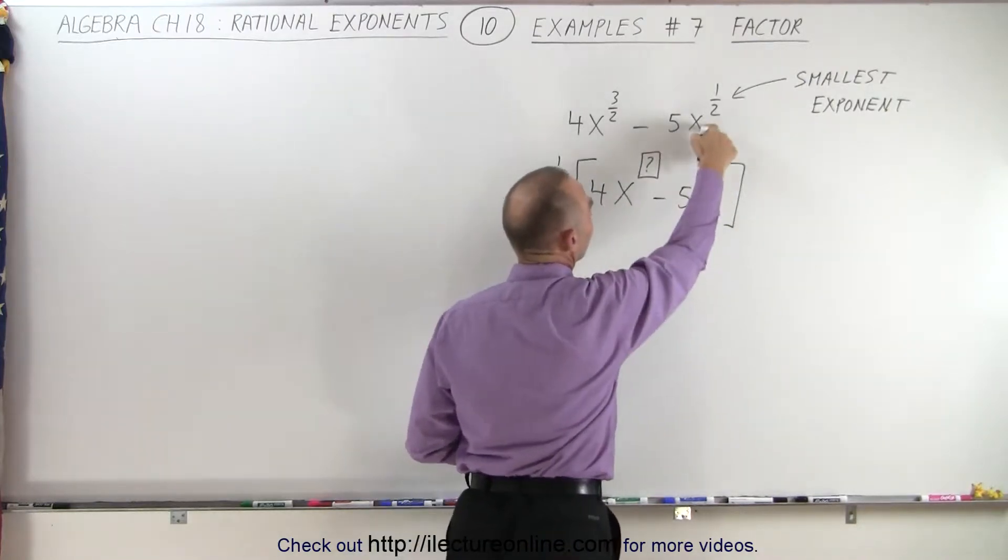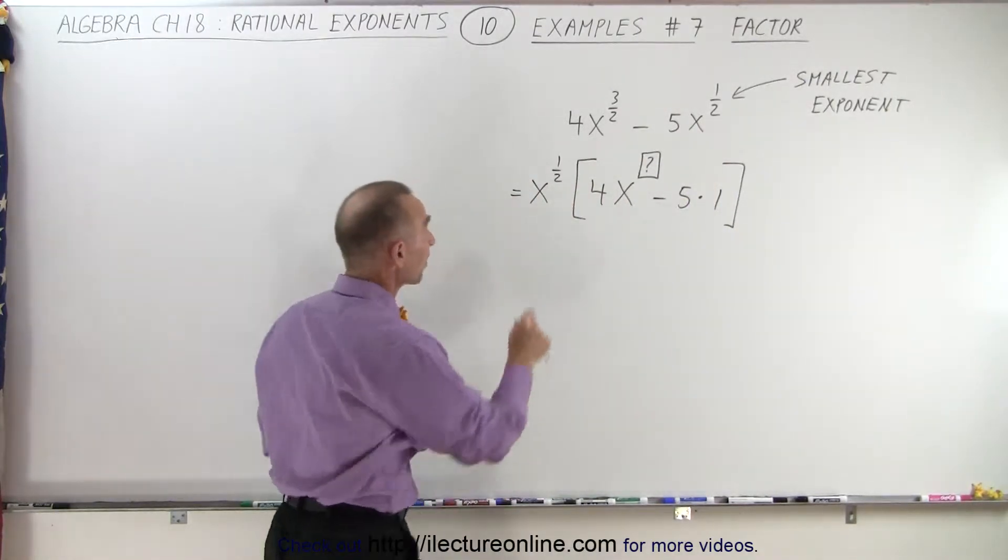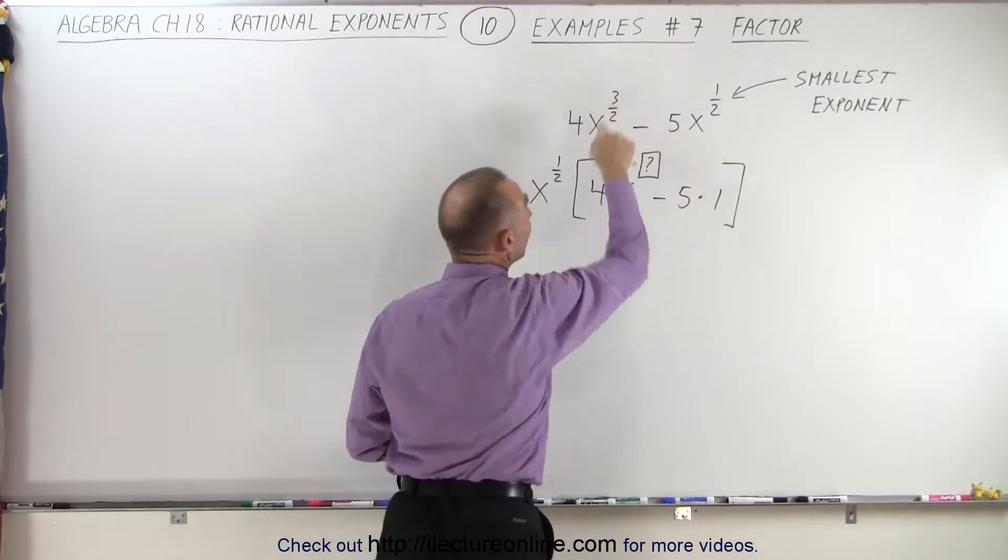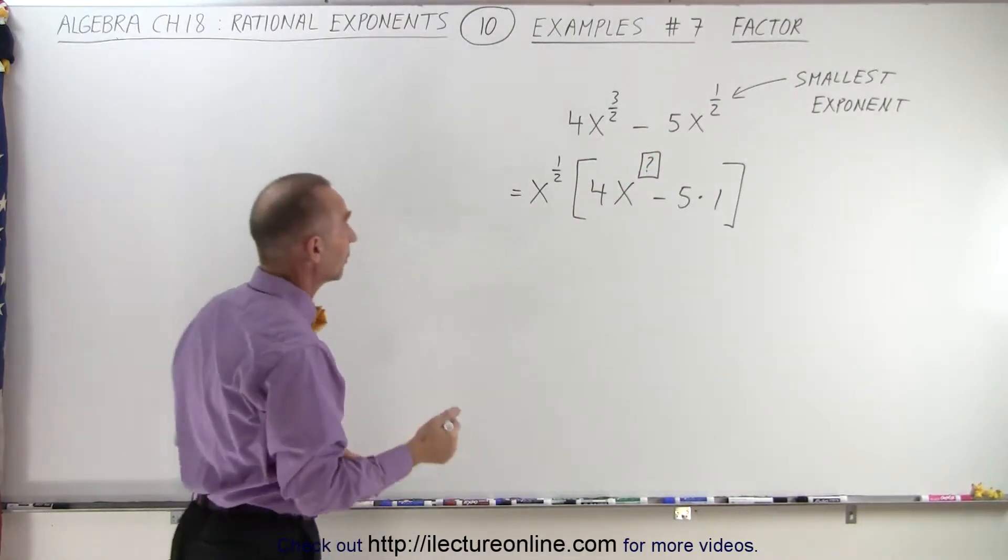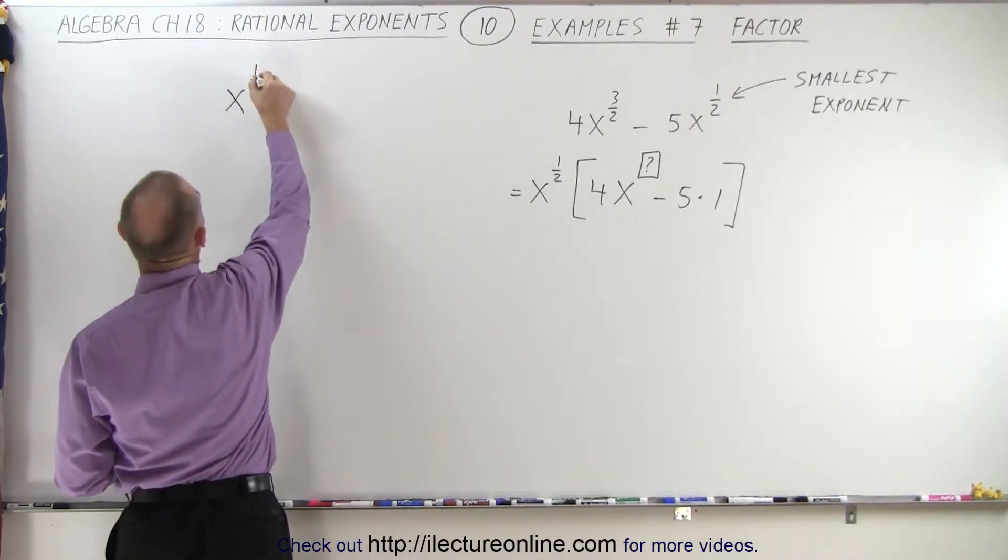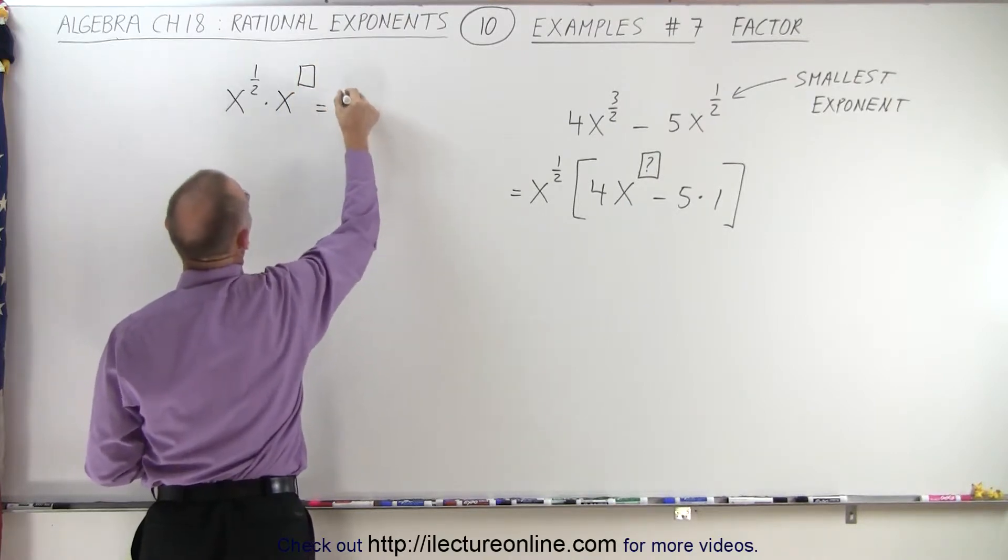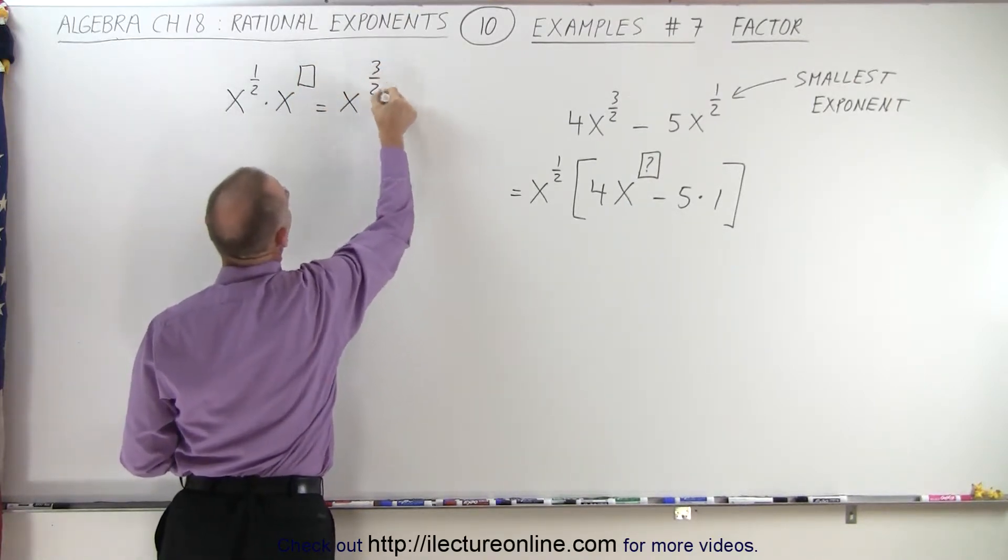For example, x to the 1 half times 1 gives us x to the 1 half back, but now x to the 1 half times x to what exponent gives us 3 halves back? So essentially what we're trying to do is we're saying x to the 1 half times x to some exponent gives us back x to the 3 halves.